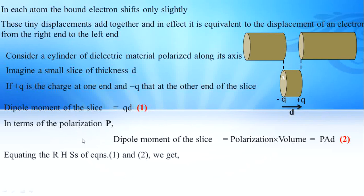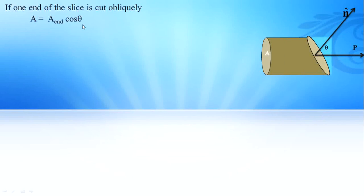We can equate both equations. Polarization P equals q divided by A, which is charge per area — that is σb. If one end of the slice is cut obliquely, A equals A_end times cos θ. So the general equation is A = A_end cos θ. If θ equals zero, cos θ equals one, meaning the normal goes along the line of polarization, and A equals A_end.